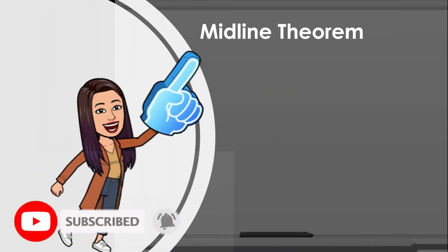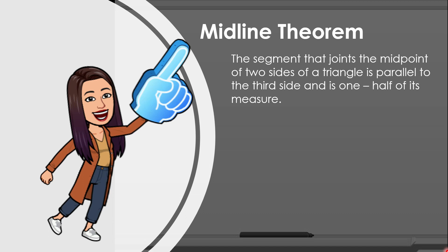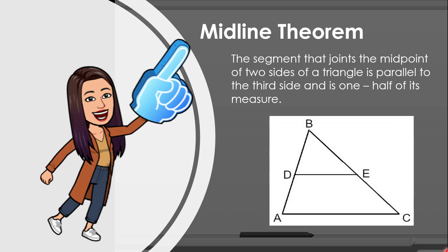So what is the midline theorem? The midline theorem states that the segment that joins the midpoints of two sides of a triangle is parallel to the third side and is one half of its measure. Take a look at this figure — triangle ABC. D is the midpoint of segment AB, dividing it into two equal parts, AD and DB. Similarly, E is the midpoint of BC, dividing it into BE and EC, and they are congruent.